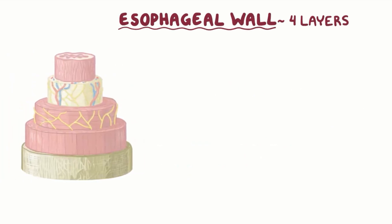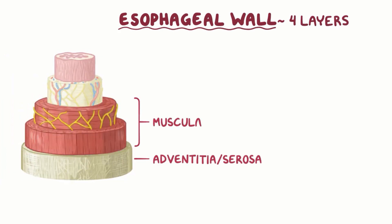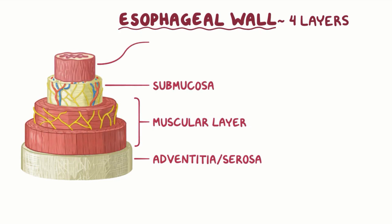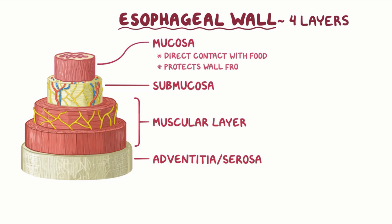The esophageal wall has four layers. From the outside in, these are the adventitia or serosa, the muscular layer, the submucosa, and the mucosa. The mucosa comes in direct contact with food, and it protects the esophageal wall from friction.